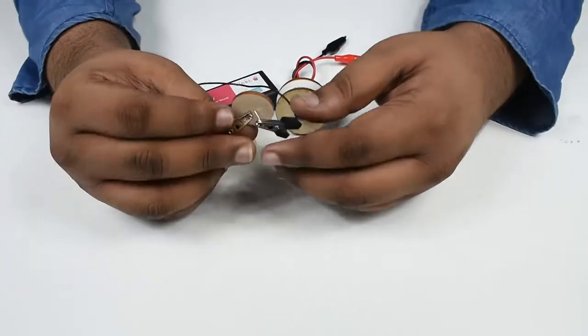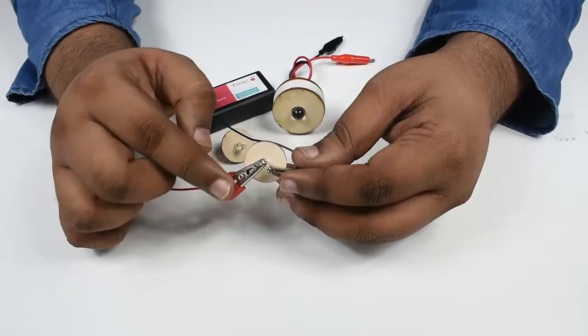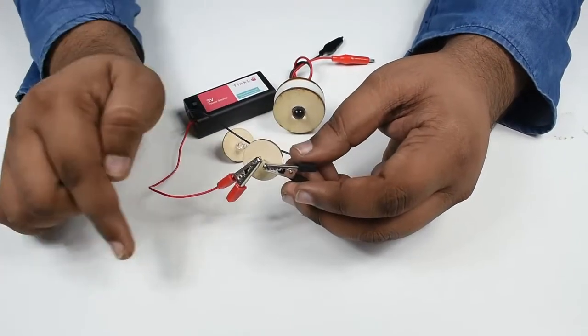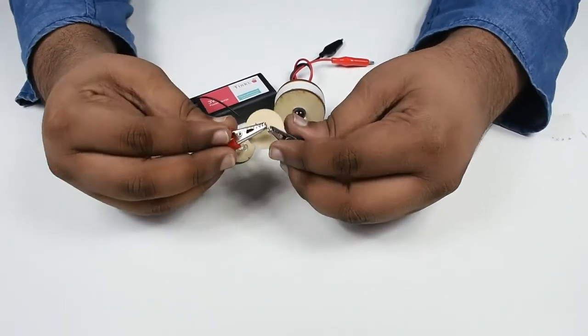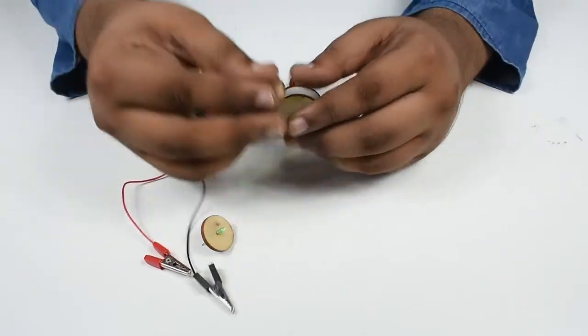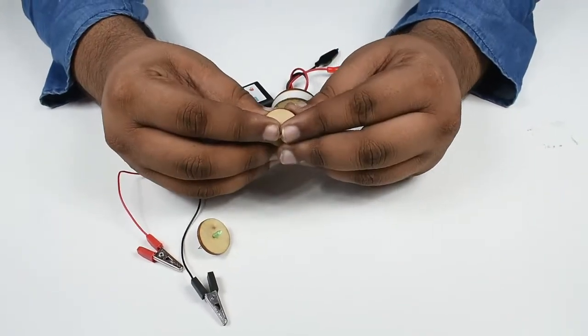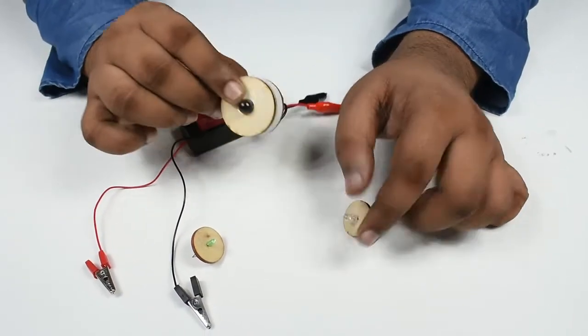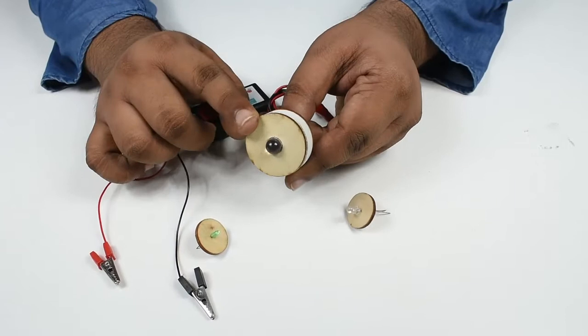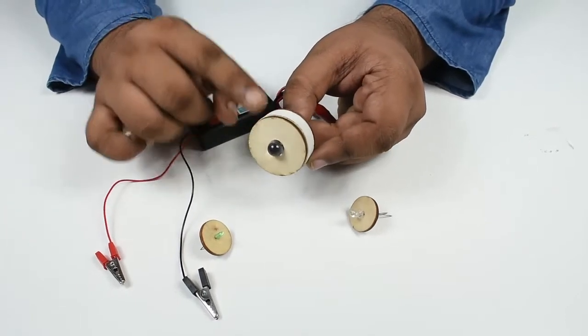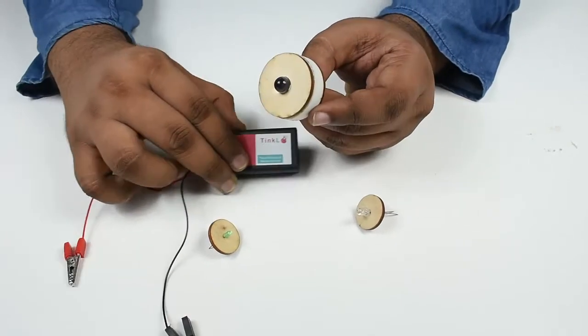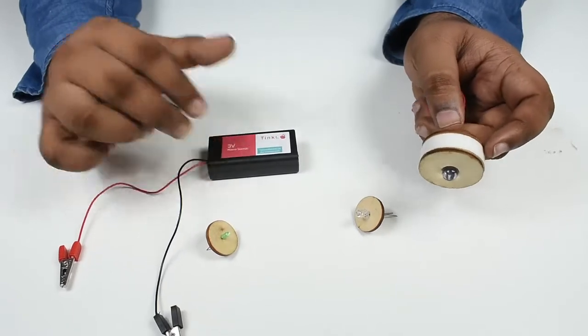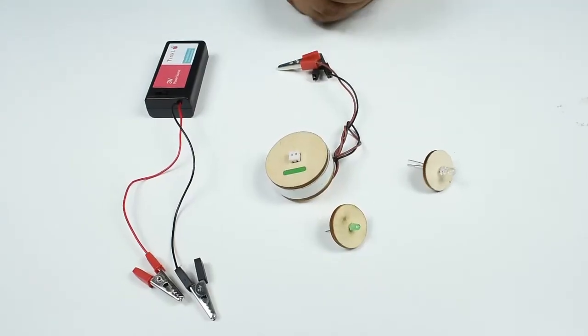Now one thing you have to be careful is that if you connect these wires the other way around, this will not work. Similarly, you can connect the other two LEDs also by seeing which is the longer one and which is the shorter terminal. Only for the 10mm LED you can use the nine volt battery, but it's always better if you use the three volt battery.